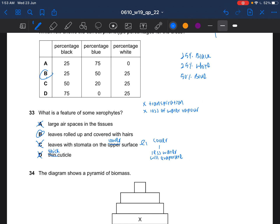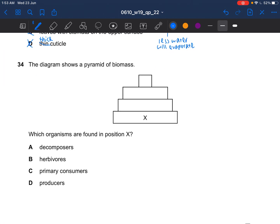Next question. The diagram shows the pyramid of biomass. Which organisms are found in position X? That would be your producers, D. Then this would be your primary, your secondary, then your tertiary.